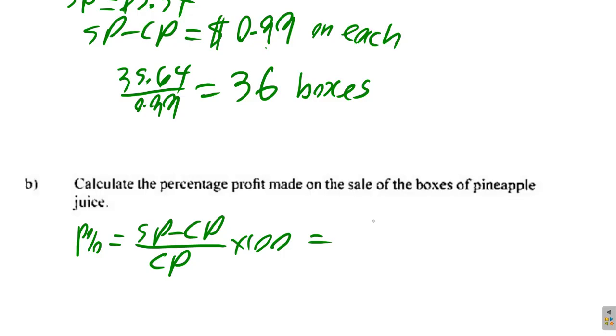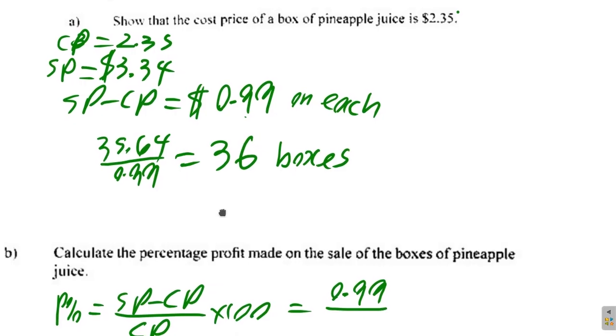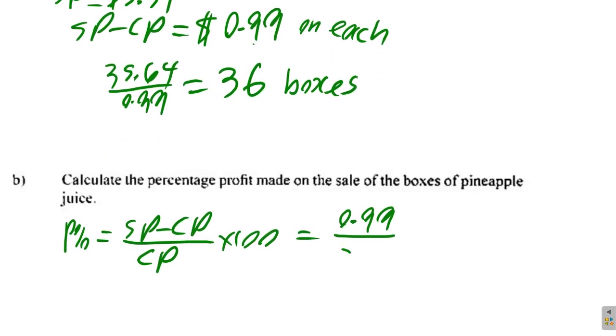So for each, we saw already that selling price minus cost price is 0.99, divided by the cost price of 2.35, times 100. So use our calculator and work it out: 0.99 divided by 2.35 times 100. That's about 42%. We're looking at 42% profit in this case.